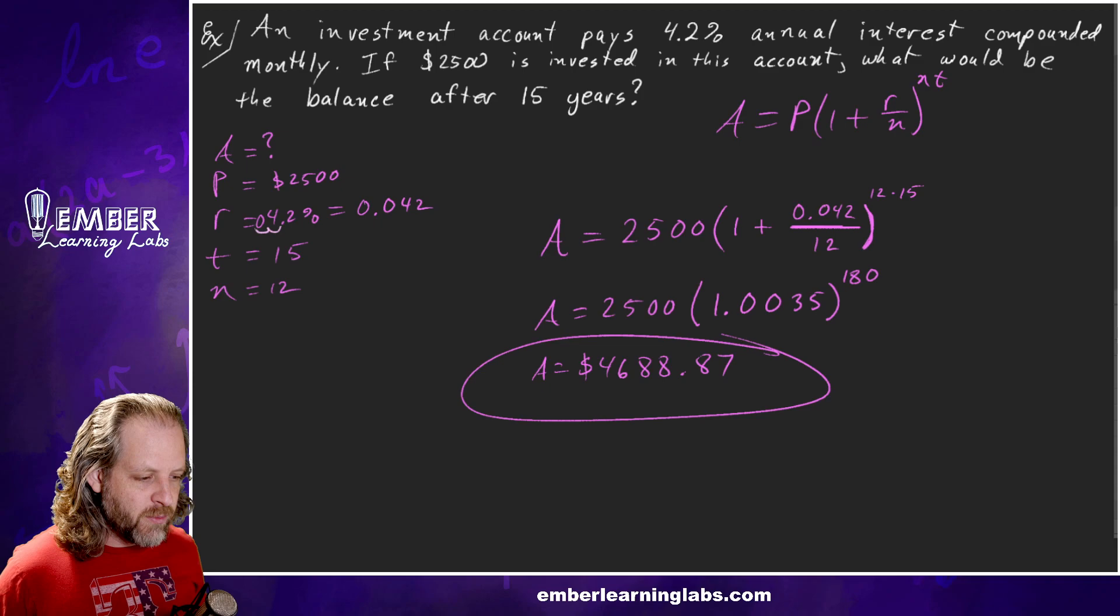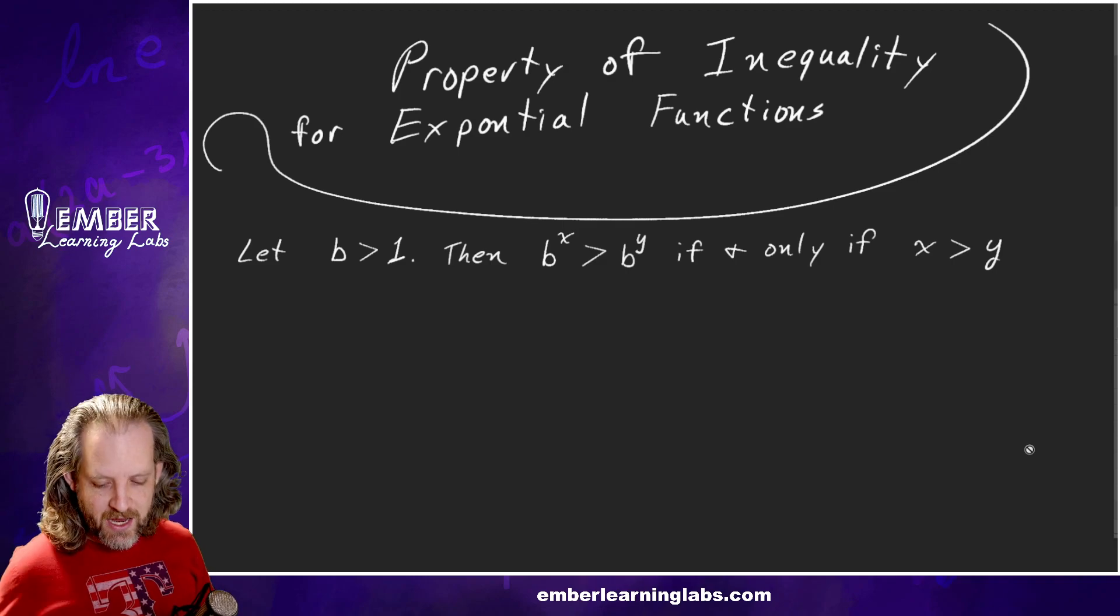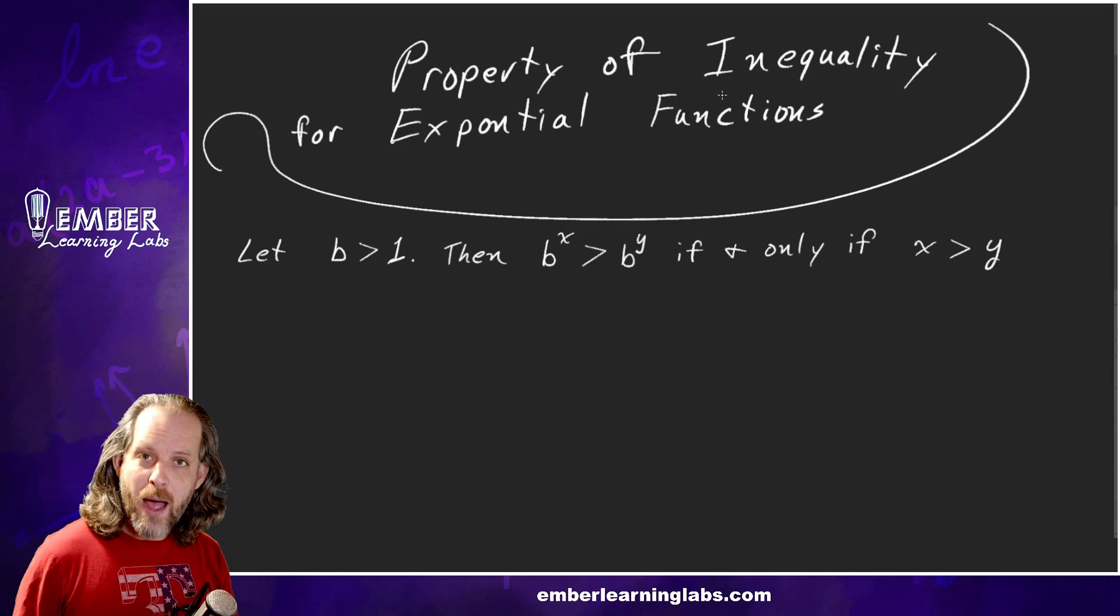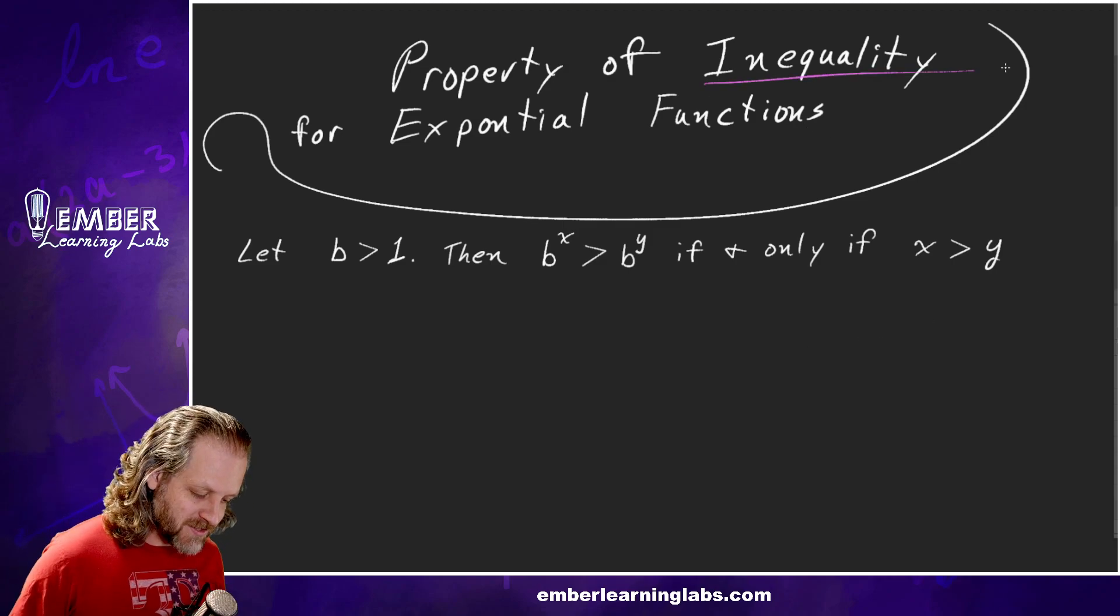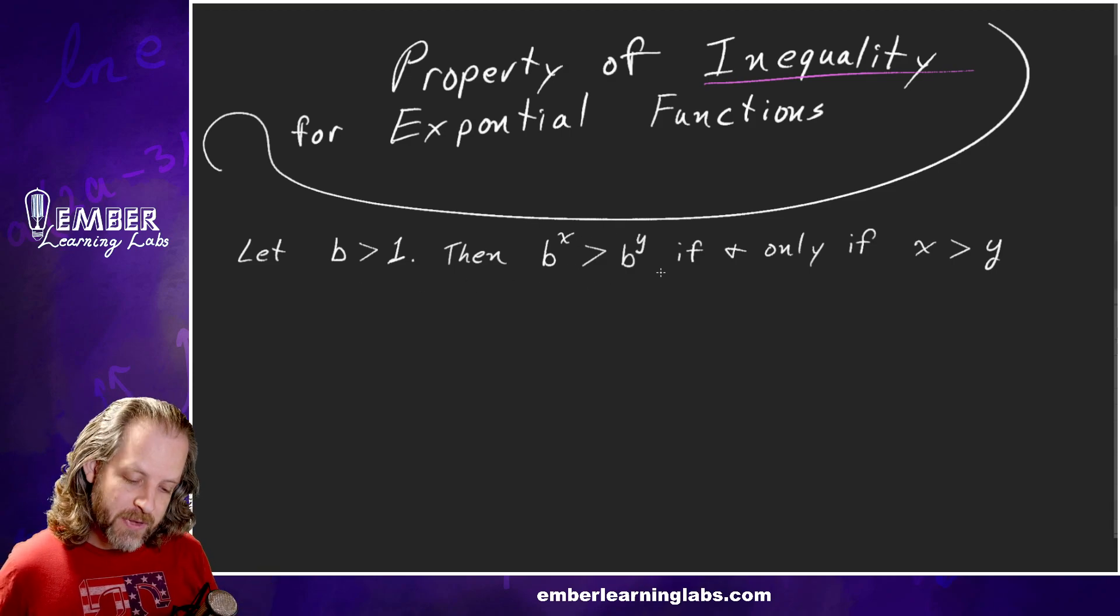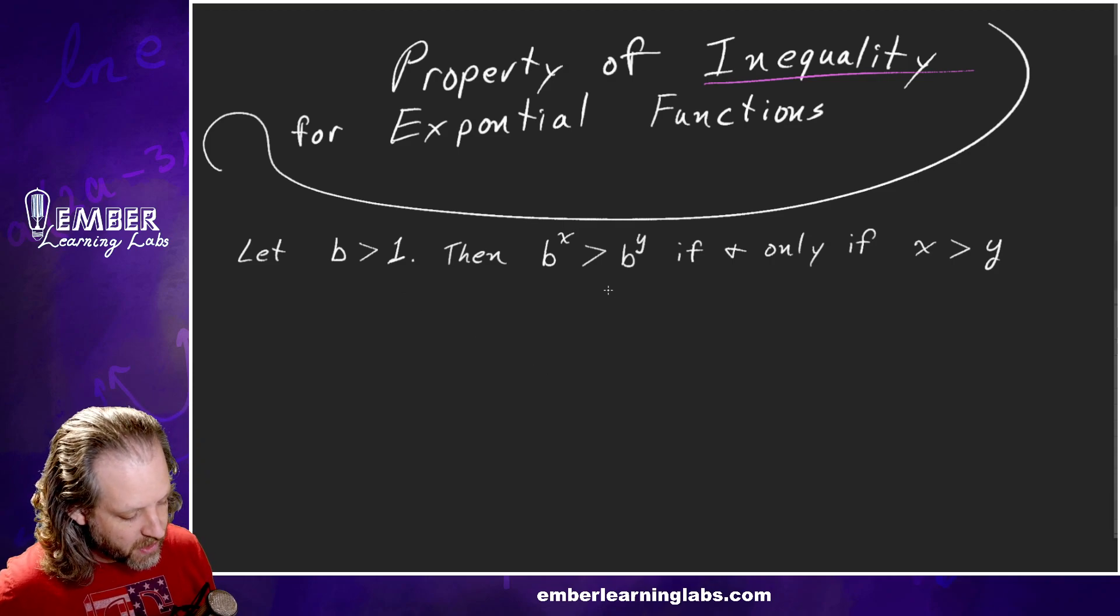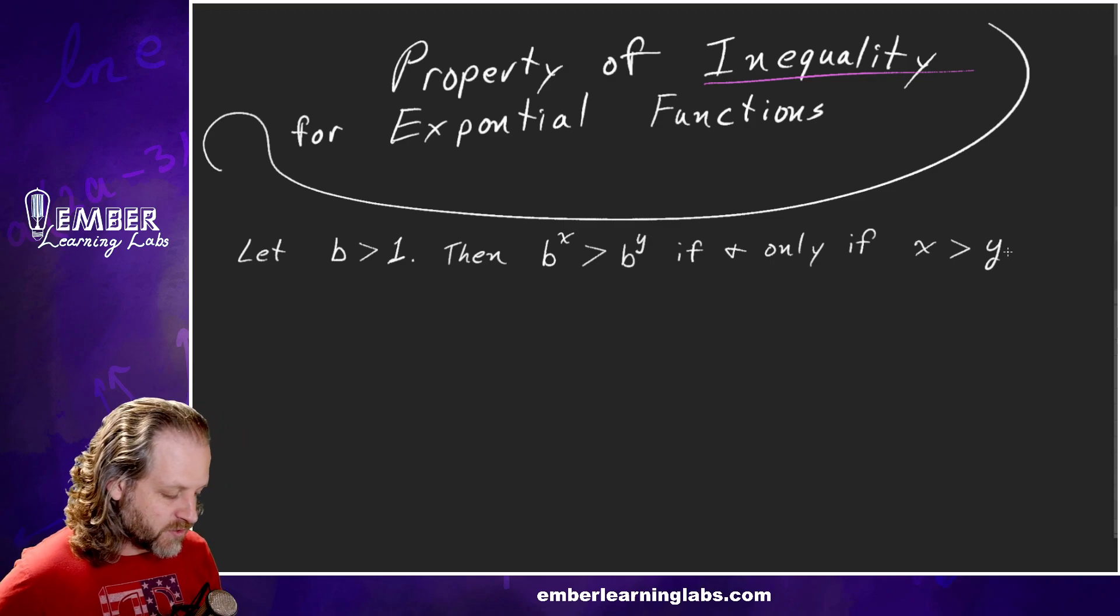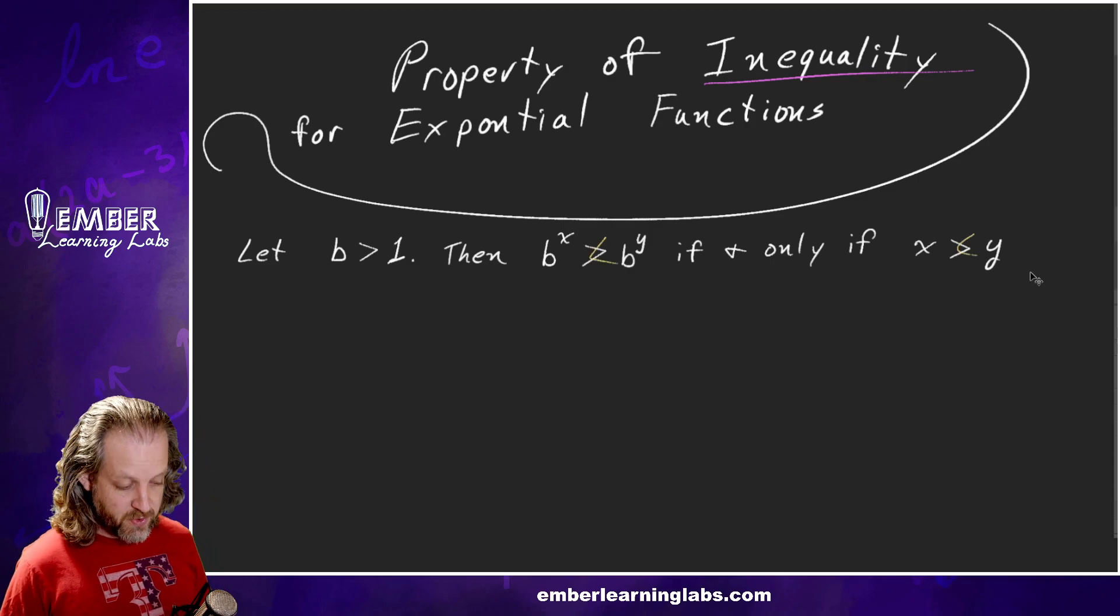Property of inequality for exponential functions. The property of inequality. Inequality is the new word. This slide looks a lot like that other slide, but now it says inequality and we've got these greater than symbols. This would also be applicable, you could write this in the reverse, for less than as well. B's got to be greater than 1, just like we saw before. So b^x is greater than b^y if and only if x is greater than y. This would also be true in the reverse. So if it said less than, that would be true as well. Let's do us an example.